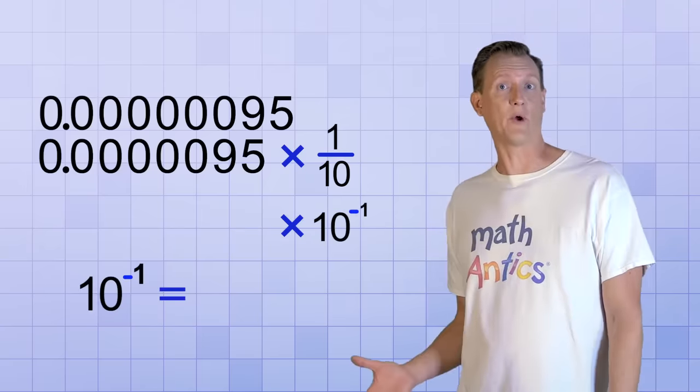Continuing on, if we shift the decimal point another place to the right, the same thing happens — we make the number 10 times bigger, so to keep the value the same, we have to multiply by another factor of 10 to the negative 1. And if you're wondering whether we can combine these exponents, you're on the right track. 10 to the negative 1 times 10 to the negative 1 combine to become 10 to the negative 2, which makes sense because we shifted the decimal point a total of 2 places to the right. And if we shift the decimal point 3 places to the right, we need to multiply by 10 to the negative 3 to compensate. And if we shift 4 places, then we need 10 to the negative 4 to compensate. And if we continue doing that until the decimal point is positioned so that there's only one digit to the left of it, that gives us the number in scientific notation: 9.5 times 10 to the negative 7.